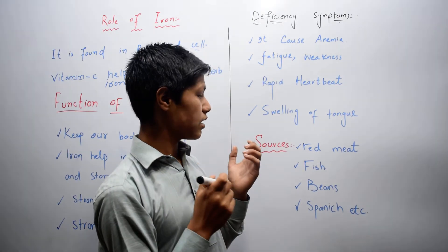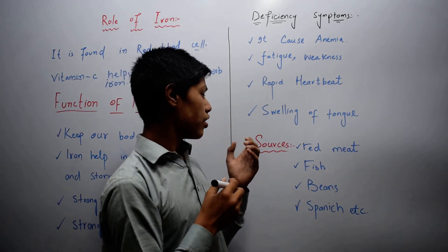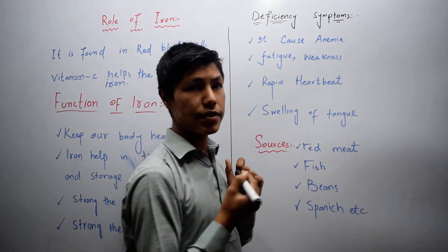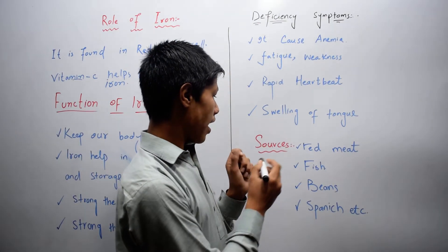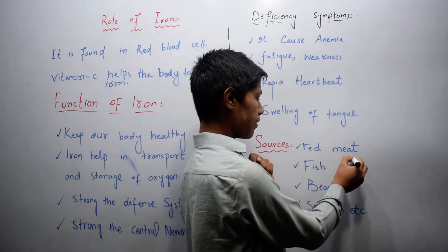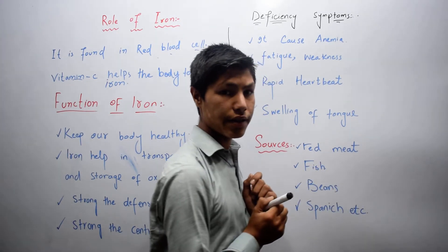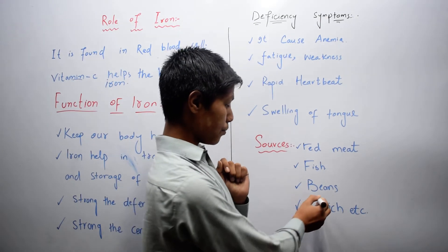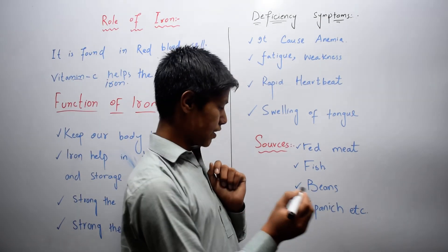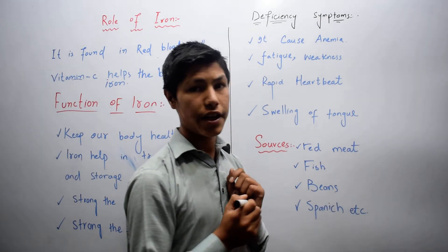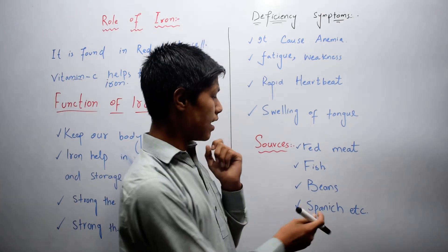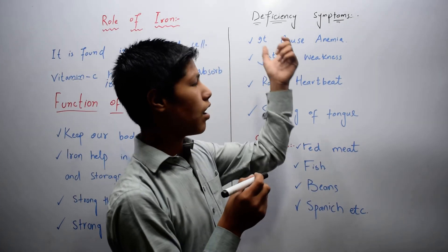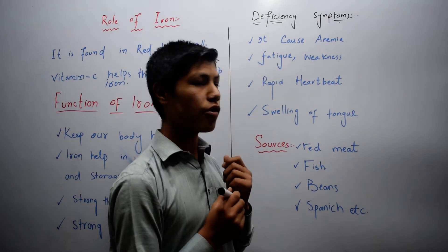Now, what are the sources of iron? From which foods and vegetables is iron present? Iron is present in red meat, fish, beans, spinach, and other fruits and vegetables in high amounts.